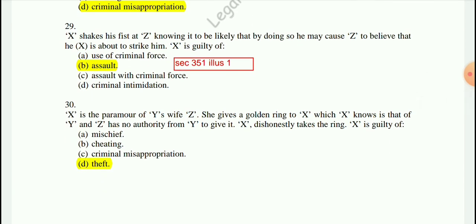Question 30: X is the paramour of Y's wife (Z). Z gives a golden ring to X which X knows belongs to Y, and Z has no authority from Y to give it. X dishonestly takes the ring. X is guilty of theft.